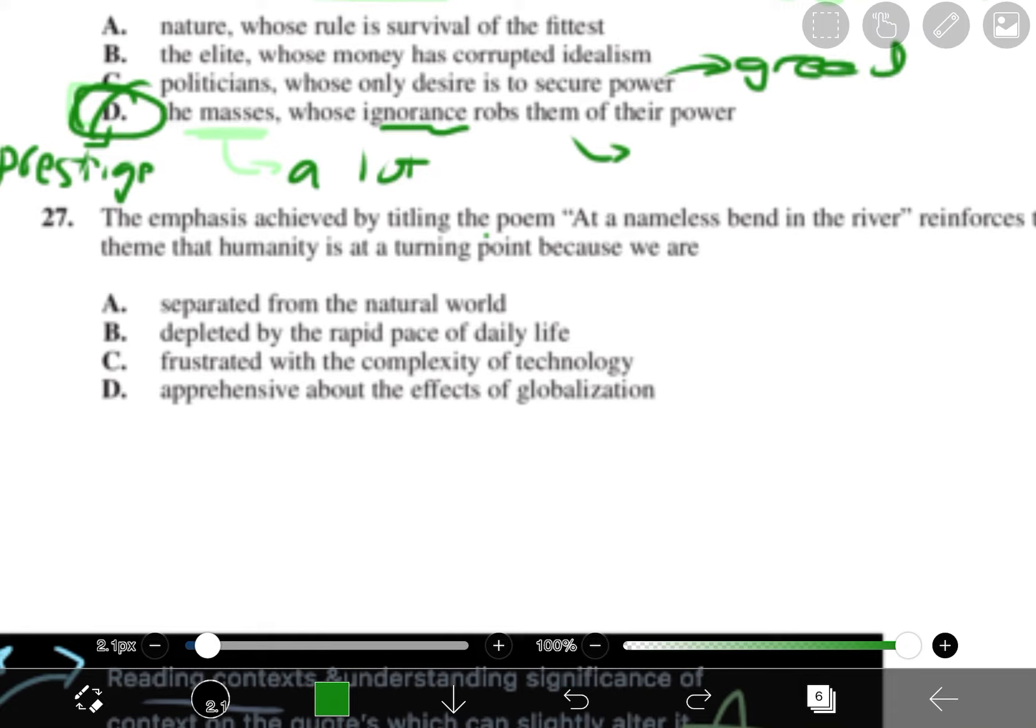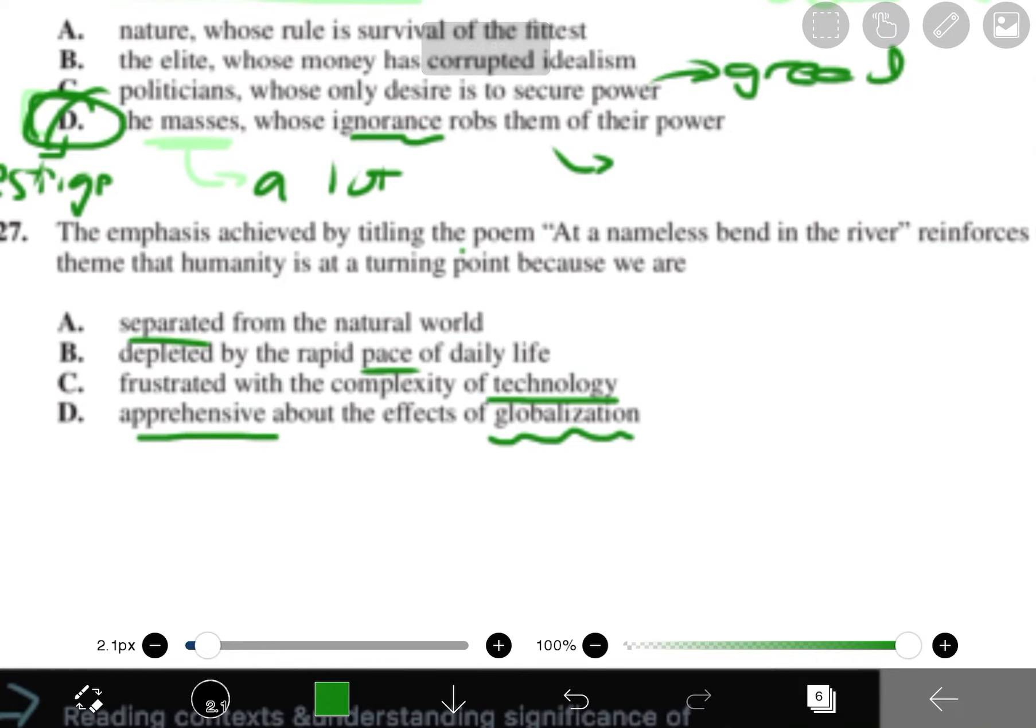Separated from a natural world, depleted by the rapid pace of daily life. That's a lot of words. So we'll just pull out the main idea of each answer. Separated, pace, frustrated, complex in technology, apprehensive globalization. Turning point. Now, just scan all the words that I highlighted or just scan all the keywords, key ideas, and then think which one has more turning point to it. Which one has more change and transformation to it. And if that doesn't click, let's see which one has something that, which one has a theme in it.